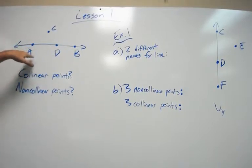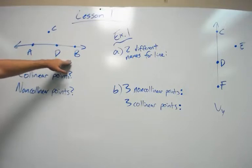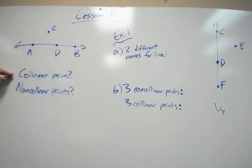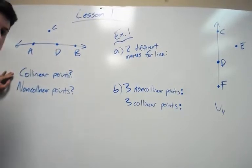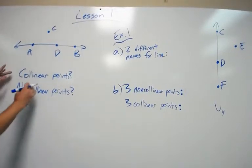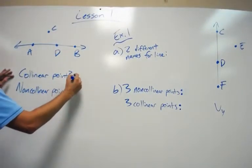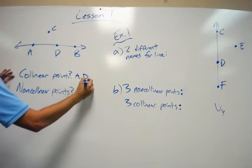When you have points on the same line, they are referred to as collinear points. So an example of collinear points here would be A, D, and B.